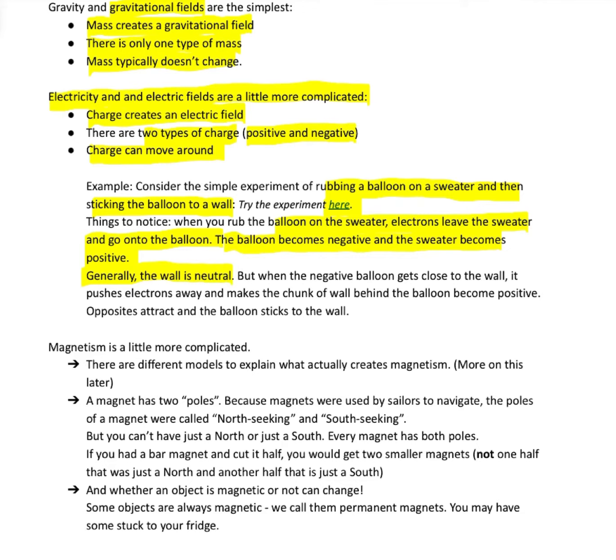Generally speaking, walls are connected to the ground. They're grounded. They're always neutral. But if you bring the negative balloon close to the wall, it induces a charge in the wall. It pushes electrons away from that little bit of wall that's close to the balloon. So that chunk of wall, since we've pushed electrons away, that chunk of wall becomes positive.